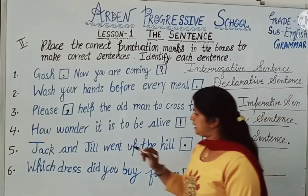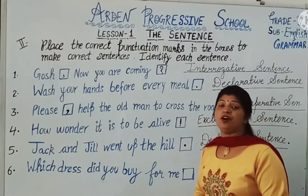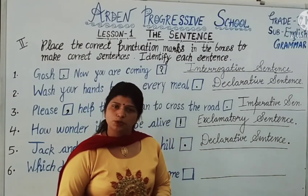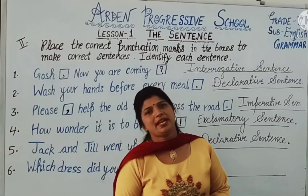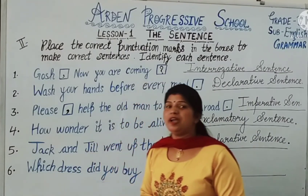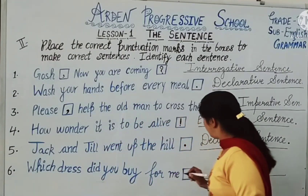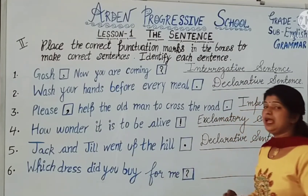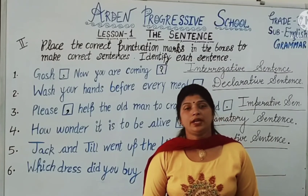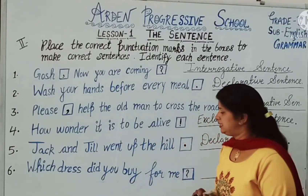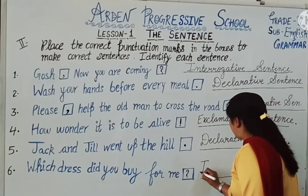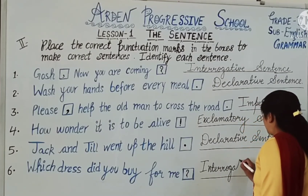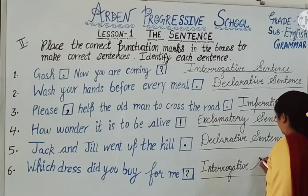Sixth one: Which dress did you buy for me? In this statement, a question has been asked, so we will put a question mark here. When a question is asked, the sentence is an interrogative sentence.